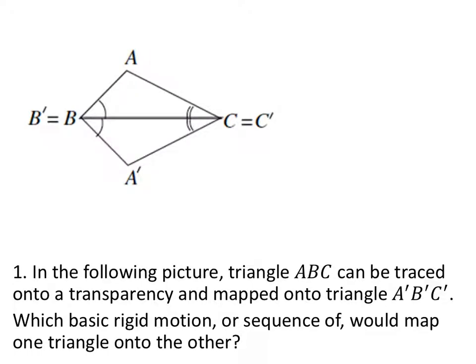In the following picture, triangle ABC can be traced onto a transparency and mapped onto triangle A prime, B prime, C prime. Which basic rigid motion or sequence of would map one triangle onto the other? Well, we can see that this triangle, which is the original ABC, looks like it's just been flipped, and all the points correspond with each other. So this one is simply a reflection.